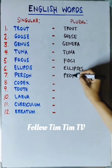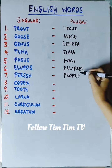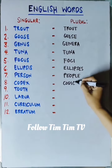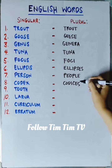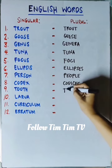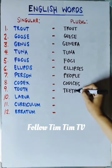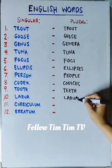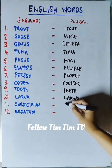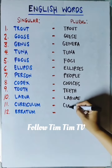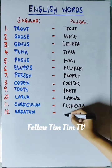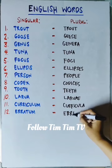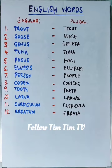Person is people. Codex is codices. Tooth is teeth. Larva is larva. Curriculum is curricula. Erratum is errata. Share this video and follow TimTimTV for more.